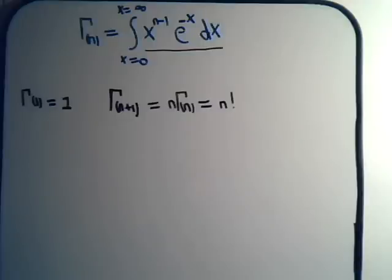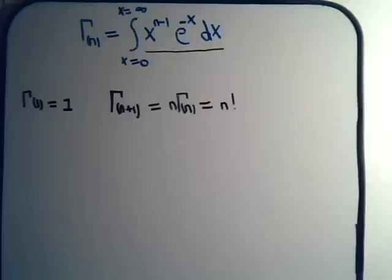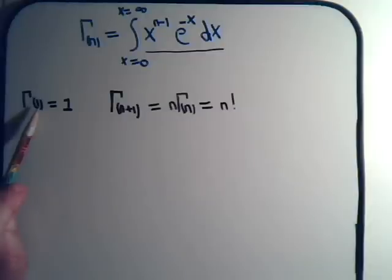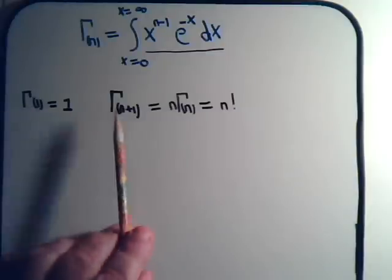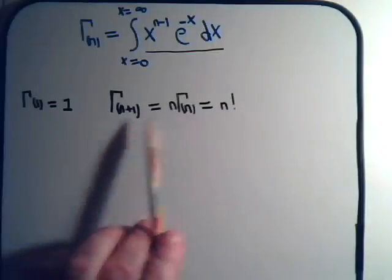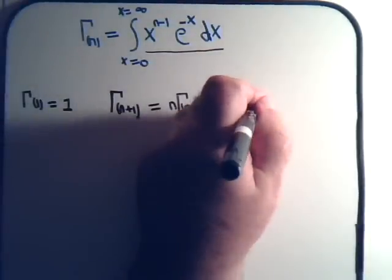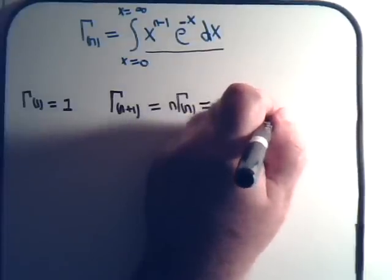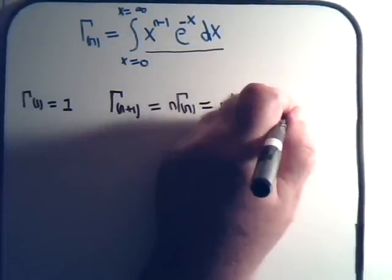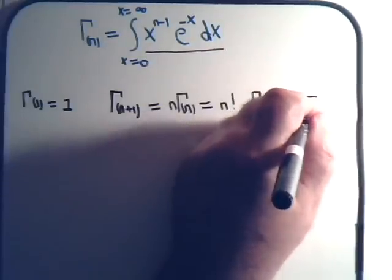In the last couple of videos we've been working with the gamma function and exploring some of its basic properties. So far we have established that the gamma function of 1 is equal to 1, and we've also shown this relationship among the gamma function. In a previous video we stated that for fractions, for example the gamma function of 1/2, that's equal to the square root of pi.